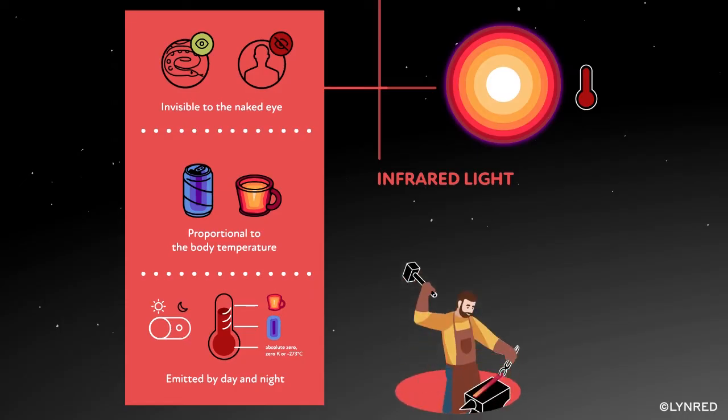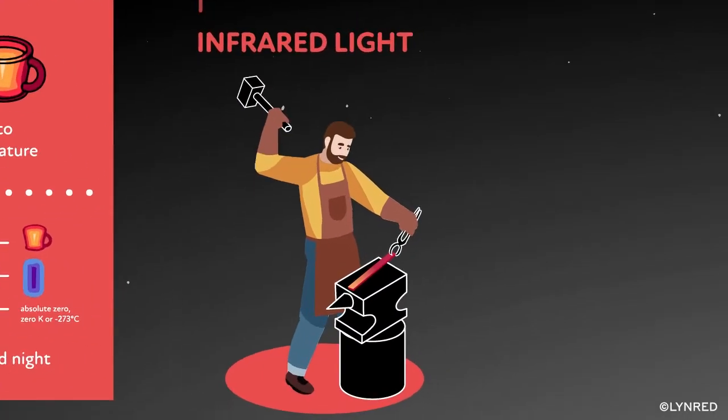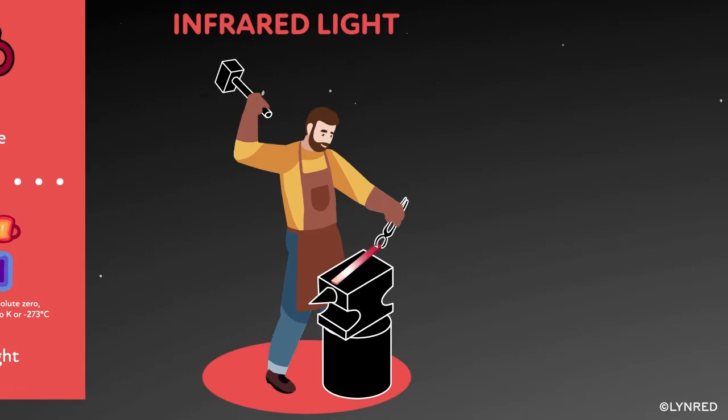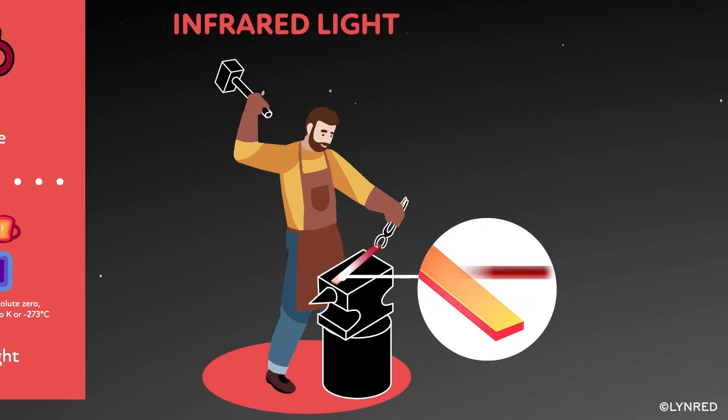For example, when a blacksmith heats a piece of iron until it's white hot, we see it as white because it is emitting radiation at all wavelengths in the visible spectrum.